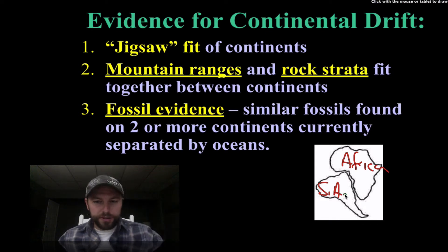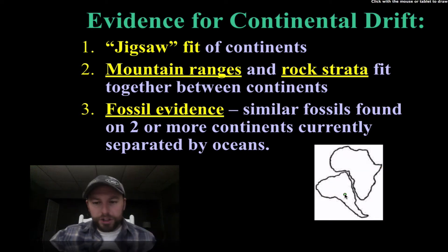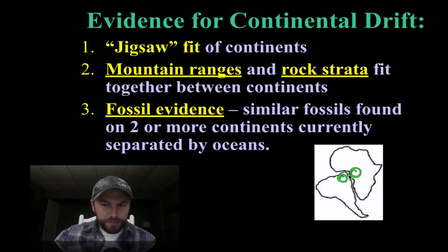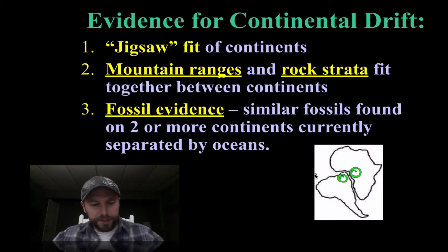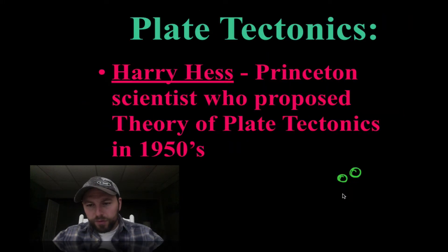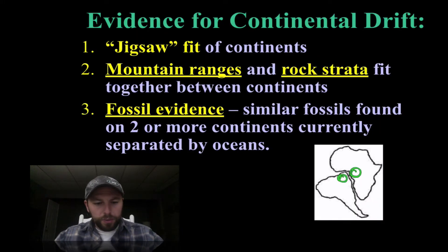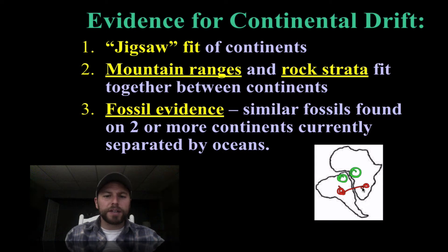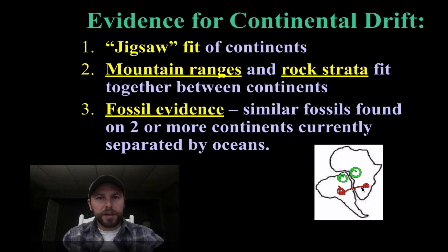We also see similar rock strata — the rocks that are over here are similar to the rocks that are over there. And we also see fossil evidence. We may have some sort of fossil in this area and it also crosses the bridge into here. If we find similar fossils on separate continents, it means at some point they had to be connected so that the organism could travel back and forth.